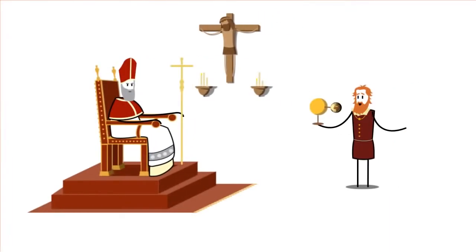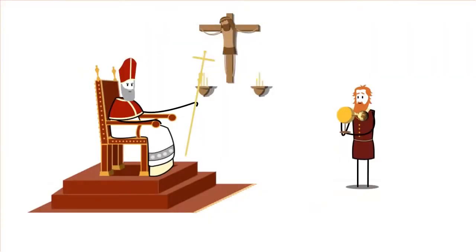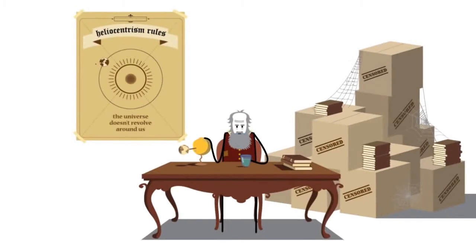Unfortunately, Galileo failed to convince the church that heliocentrism does not contradict the Bible. A tour in the dungeons of the Inquisition, however, did convince Galileo to recant. He was sentenced to house arrest for the remainder of his life and forbidden from publishing his writings.